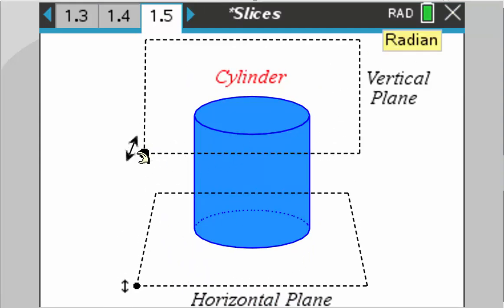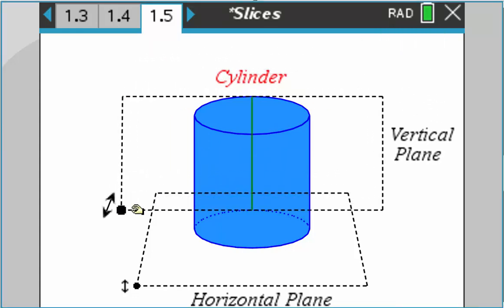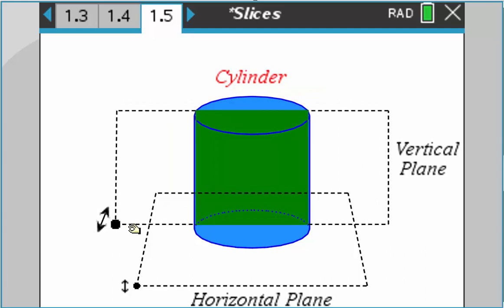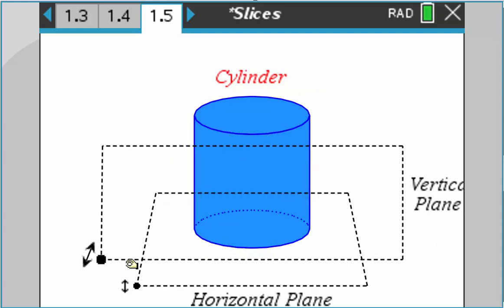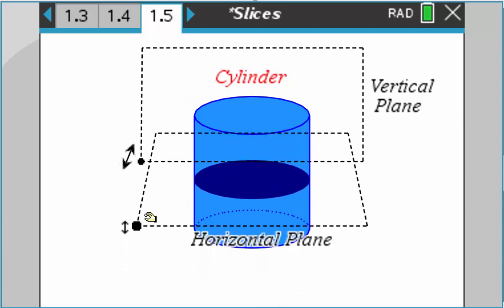Cylinder. I'll grab a vertical plane and pass it through. First hits it at a segment, then it's a rectangle, then a rectangle at the diameter, and then it gets smaller back to a segment. The horizontal plane is pretty much the circle, the base.